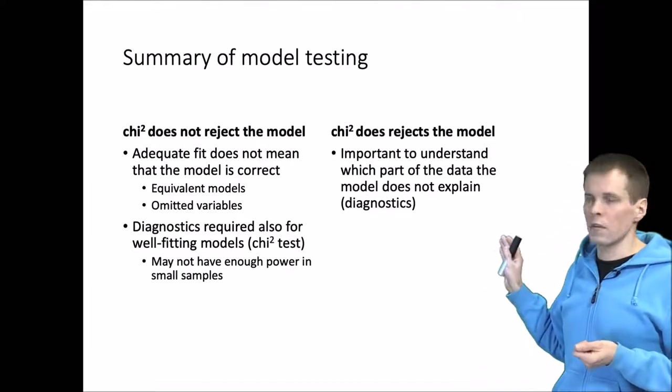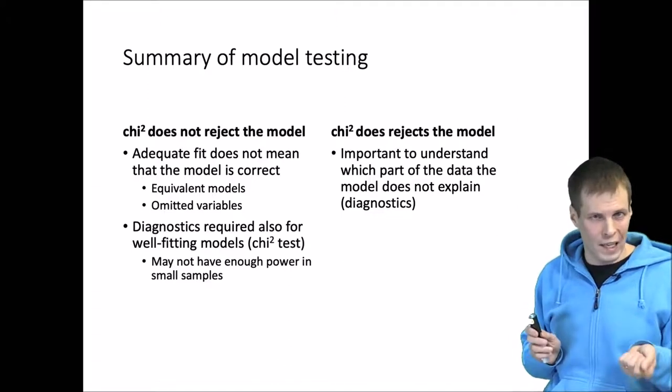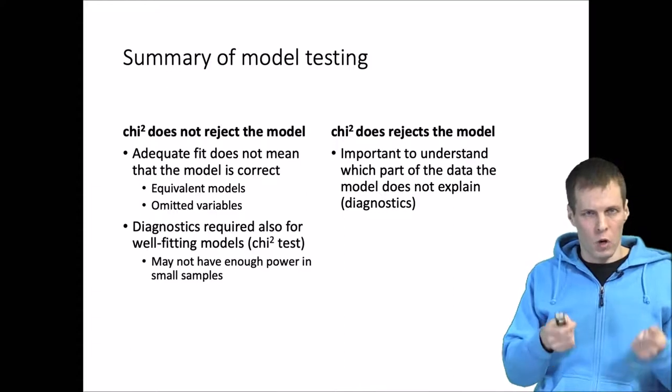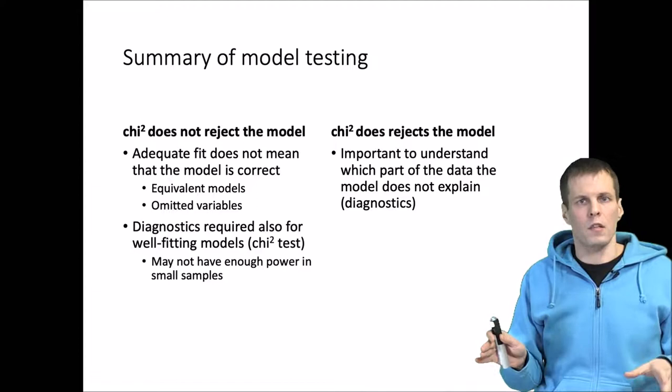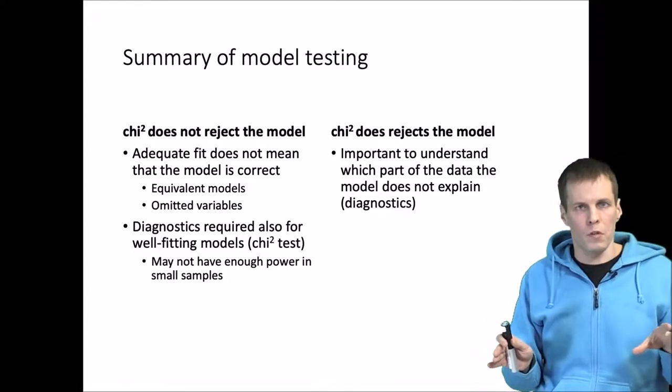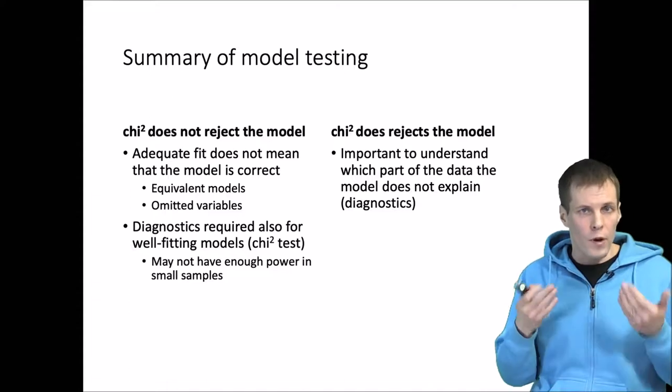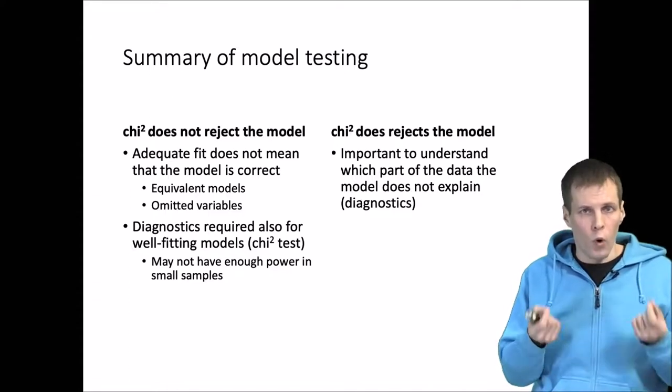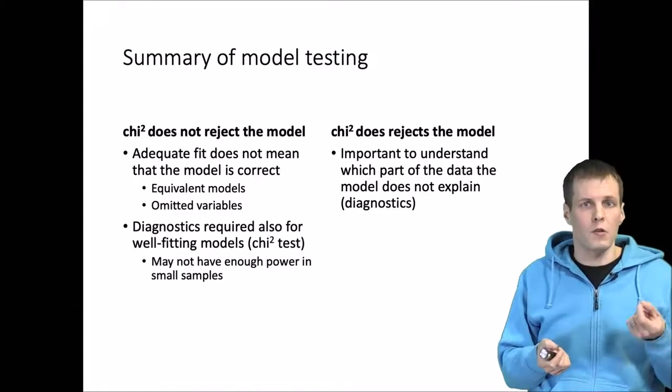So what if chi-square rejects the model? It means that the model is somehow incorrect for the data, and it becomes important to understand in which way the model does not fit. Chi-square simply measures the average covariance fit. Are there some covariances that the model reproduces well whereas others that it doesn't? And then is there a reason, some reason that you can think of, why a part of the model does not fit? And if so, is there something that you can do about it?